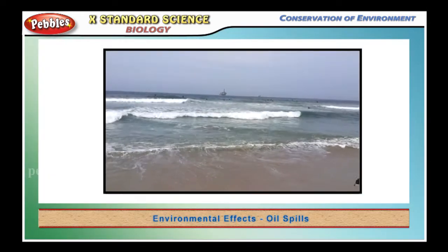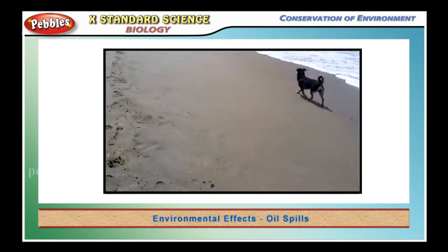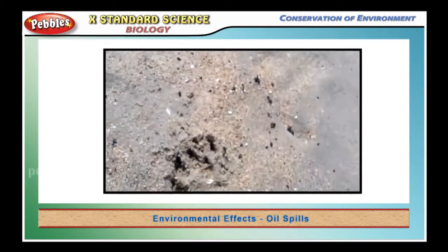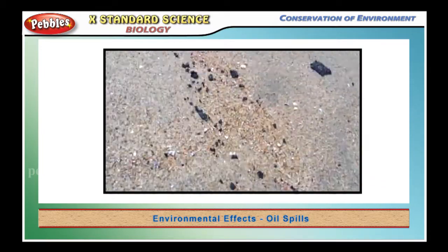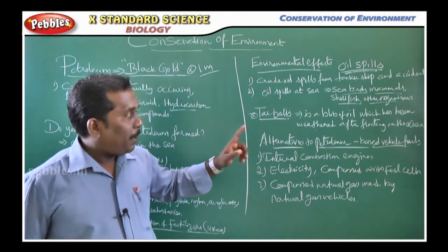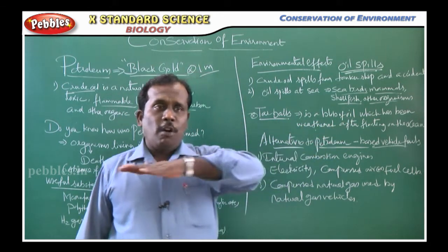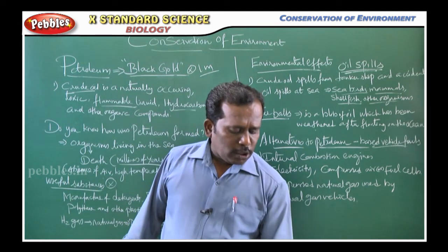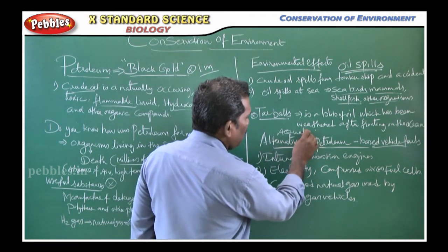Thorbal is a blob of oil which has been weathered after floating on the ocean. The entire oil layer fully covers the outer surface of the sea, so it will easily affect the organisms surviving in the ocean. It is called Thorbal, and it mostly causes aquatic pollution.